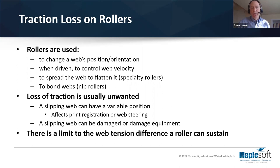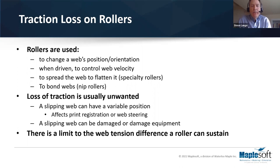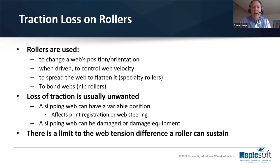There are specialty rollers used to flatten webs where there are wrinkles — spreader rollers — and in other cases, nip rollers used for bonding webs together in a lamination process. In all of these cases, most of the time we want good interaction between the webs and the rollers in terms of traction. Similar to hydroplaning on a wet road, slipping in web position is usually undesirable. It can affect things like print registration in multi-stage color printing, or web steering in a lamination process.